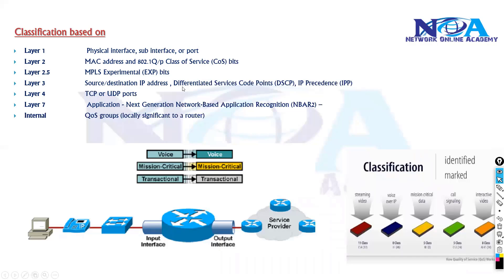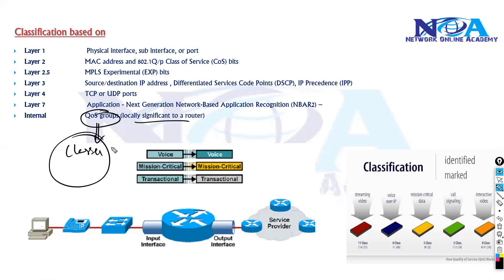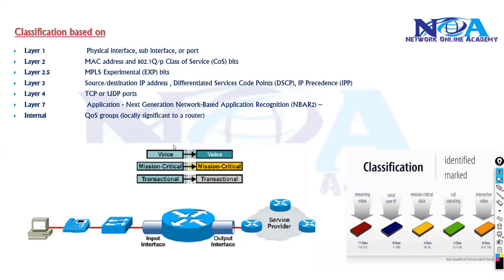There is one more option for advanced scenarios: QoS groups. These are locally significant values used by the router to classify traffic. When using multiple classes and multiple categories, we can combine them into one group and then use that group later to give special treatment to specific traffic.